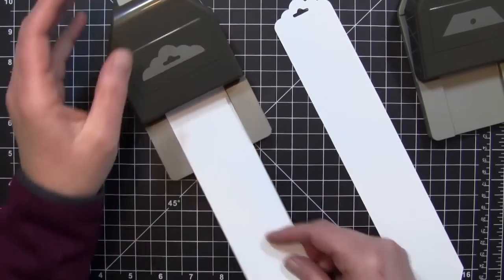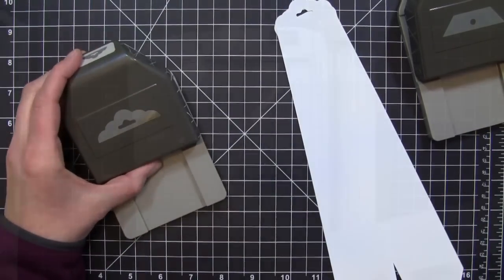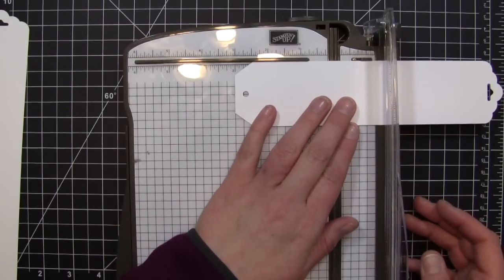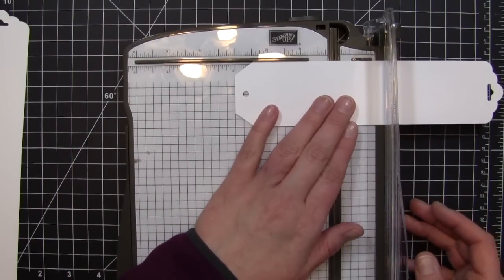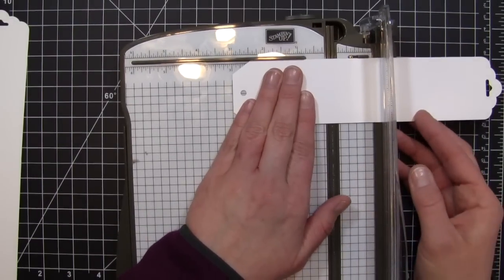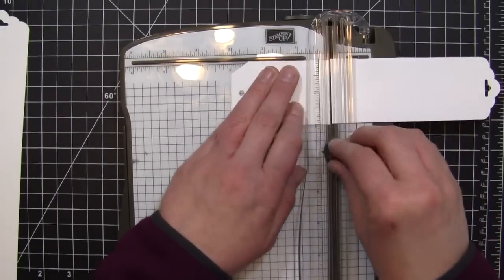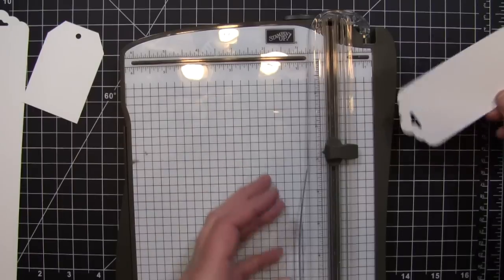After I get those punched, I'm going to take my paper trimmer and trim these down. For my angled tag, I'm going to be cutting this at three inches. What I really like about these tags is you can make them as long as you want. You can even make bookmarks out of these.